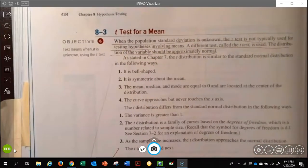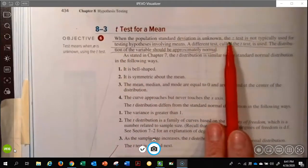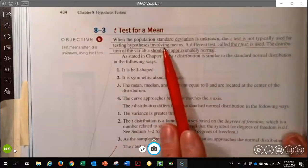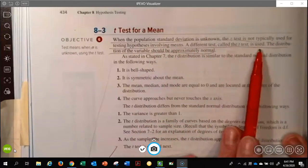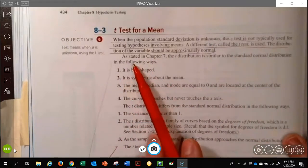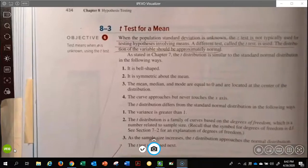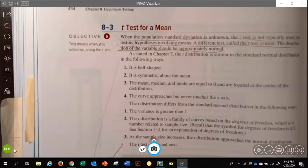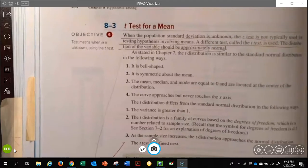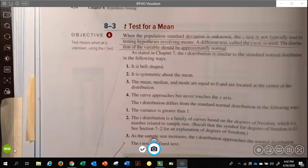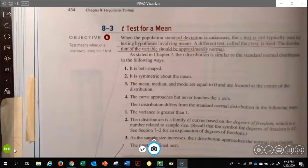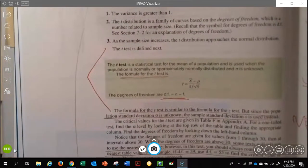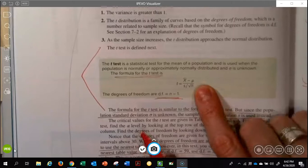So it says at the top, when the population standard deviation is unknown, the z-test is not typically used for testing hypotheses involving means. A different test, the t-test is going to be used. The distribution of the variable should be approximately normal. And again, those are going to be all of those things that we have to make sure are happening. They are very important, but for us, our book is kind of rigged, and so it's just going to happen. They're going to rig it that way for us. But if you go on in your statistics work, like for a master's or some nursing work or a doctorate, you'll need to do more with are we meeting all of the requirements to use a particular test. But for us, we're just going to pretty much assume everything's okay, but we'll still pay attention to it.